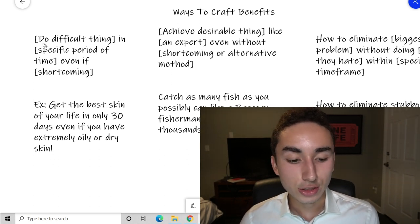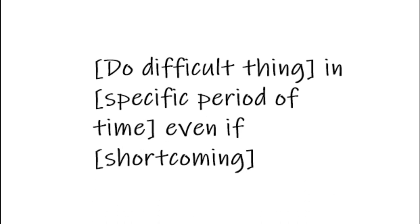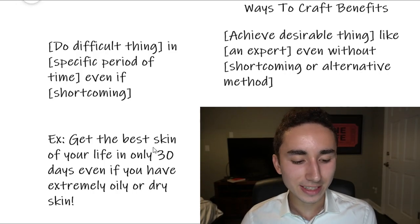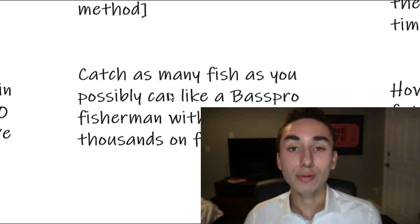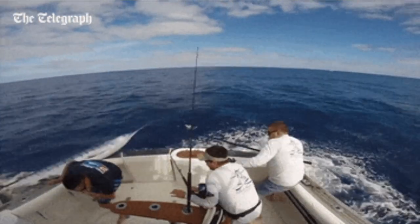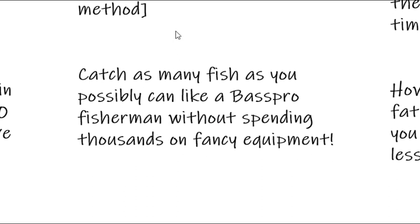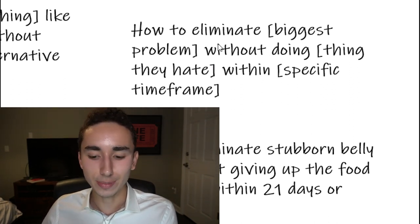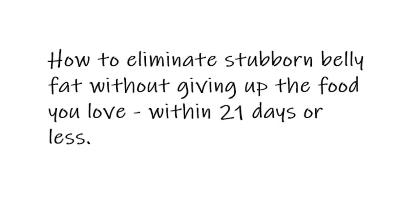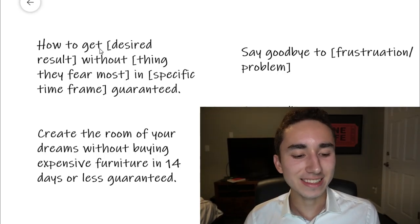For writing effective benefits, here are proven frameworks. First: 'Do [difficult thing] in [specific time period] even if you have [shortcoming]' — e.g., 'get the best skin of your life in only 30 days even if you have extremely oily or dry skin.' Second: 'Achieve [desirable result] like an expert without [shortcoming]' — e.g., 'catch as many fish as possible like a bass pro fisherman without spending thousands on fancy equipment.' Third: 'How to eliminate [biggest problem] without [thing you hate] within [specific timeframe].'